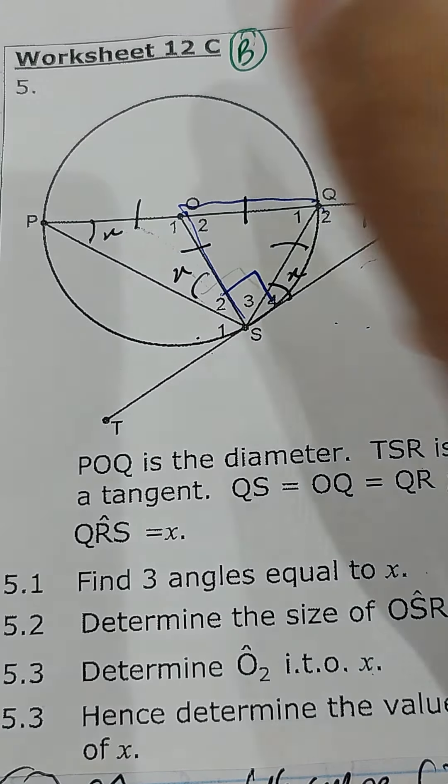So let's write that down: 2x plus 90 plus x equals 180. Sum of triangles in triangle O is R. That's going to give you 3x equals 180 minus 90, which is 90 degrees. Divided by 3, x is equal to 30 degrees.